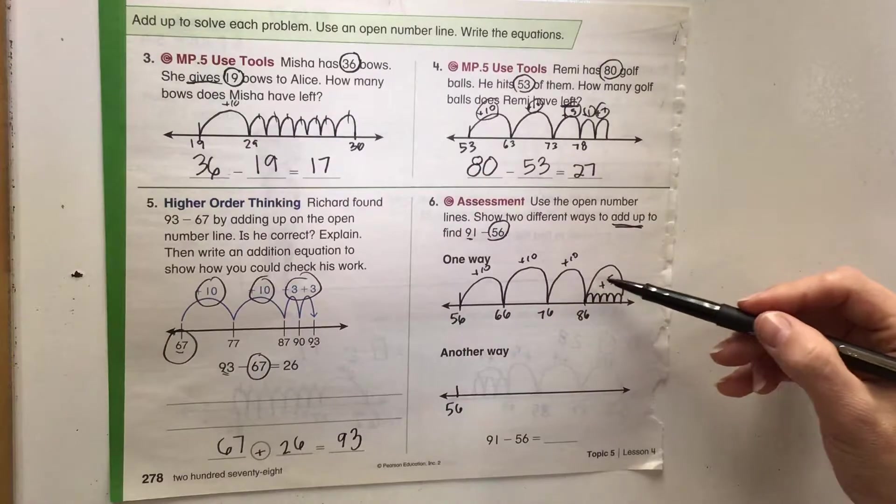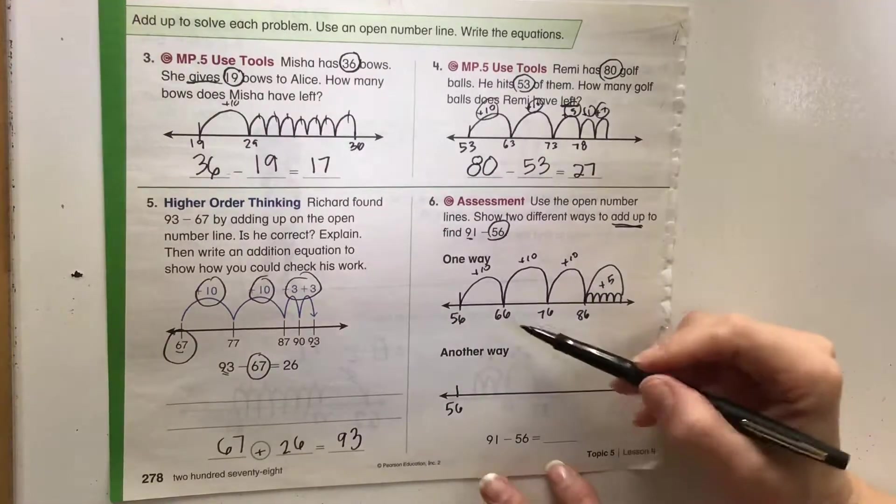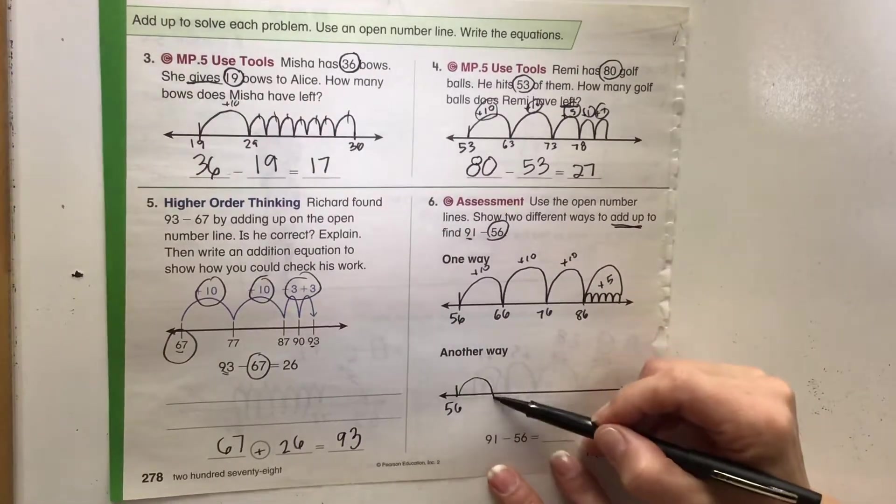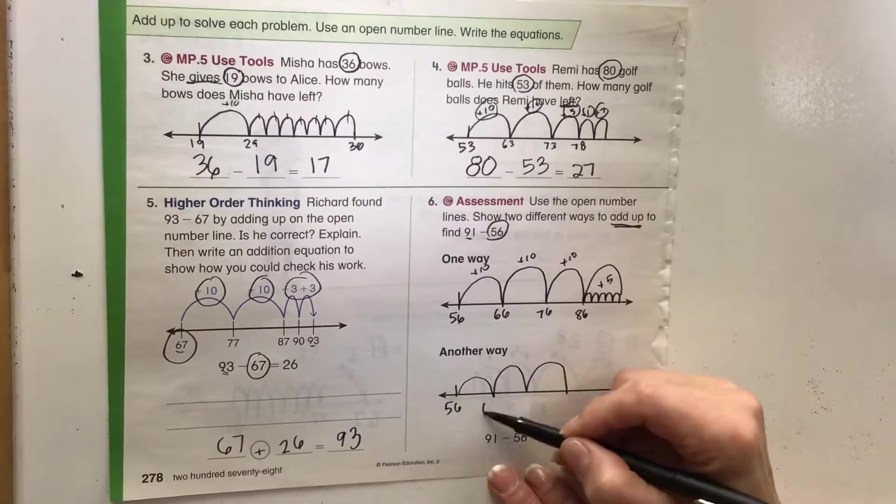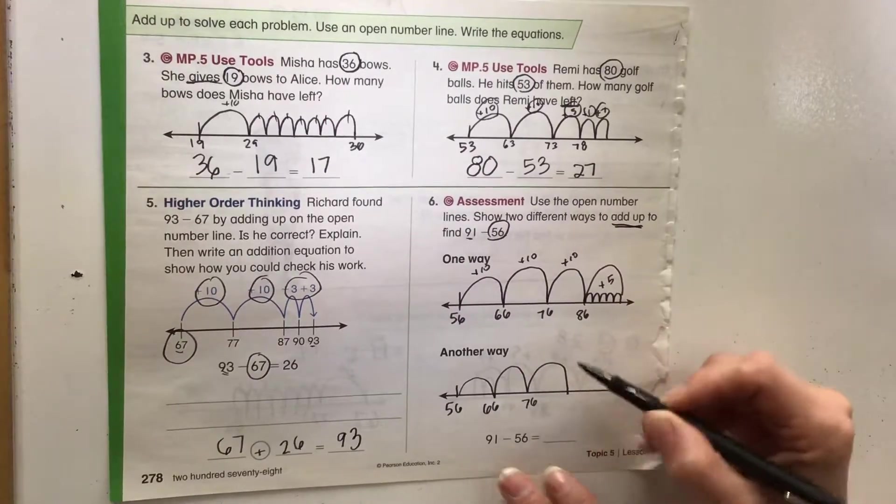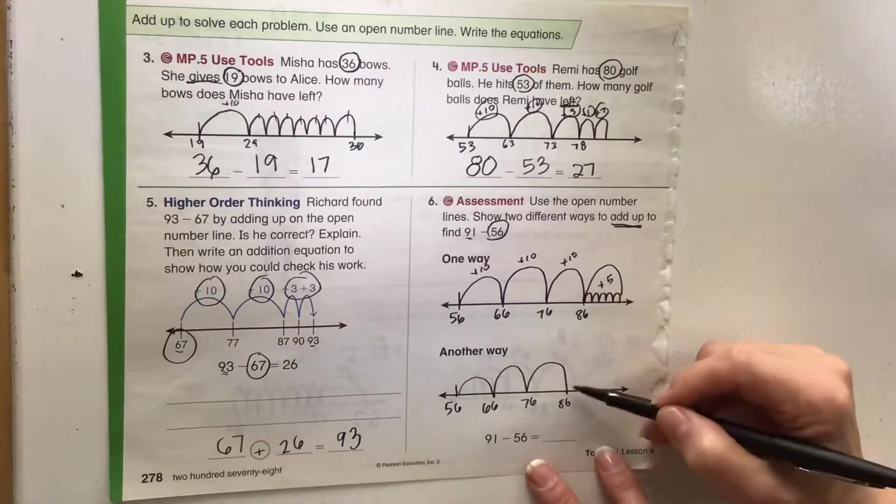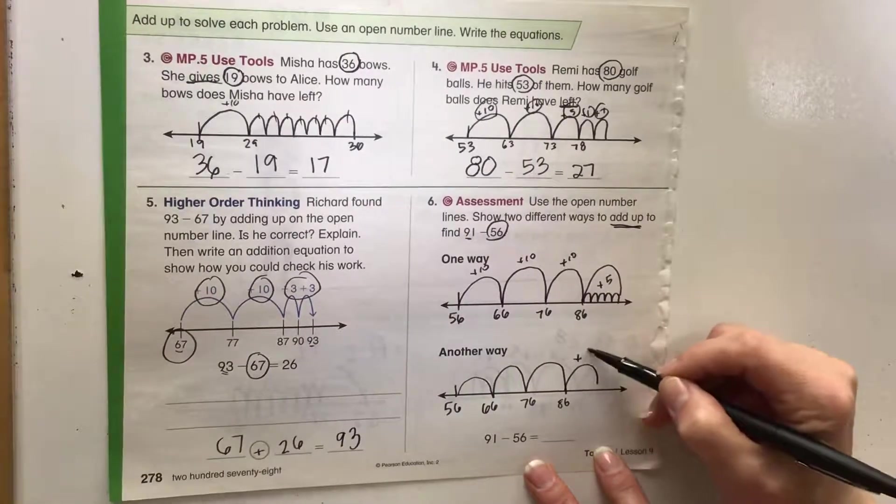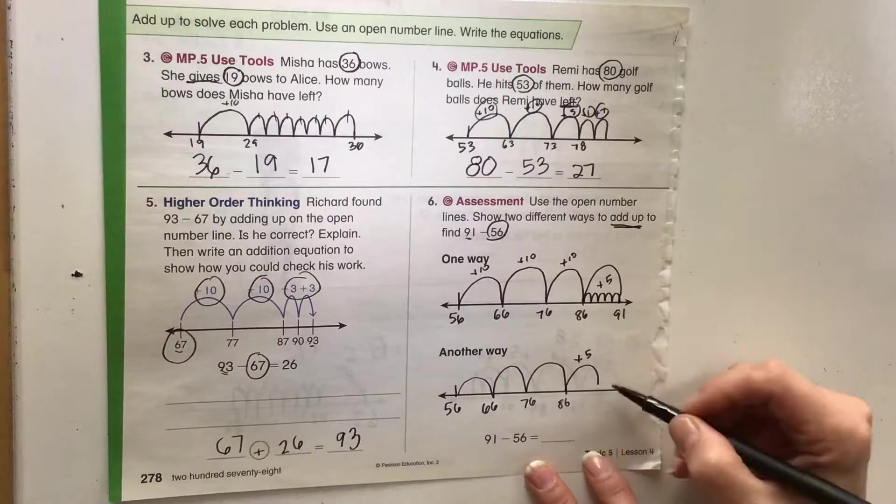This will be basically the same way that we do it down here. So we would do 10, 20, 30. So that puts us at 66, 76, 86. And then we can just do a hop of plus five here to get us to 91.